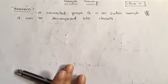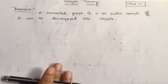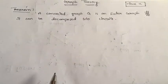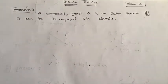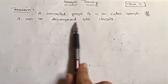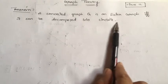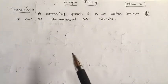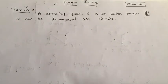An Euler graph is a graph which has an Euler line, and an Euler line is a closed walk which passes through all the edges of graph G exactly once. Decomposition means the intersection in fact, and a circuit is a closed walk in which no vertex other than the initial vertex is repeated more than once.